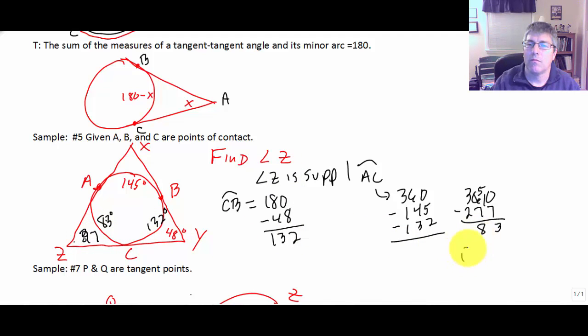So 180 minus 83 is 97. If my arithmetic is correct, angle Z is 97.